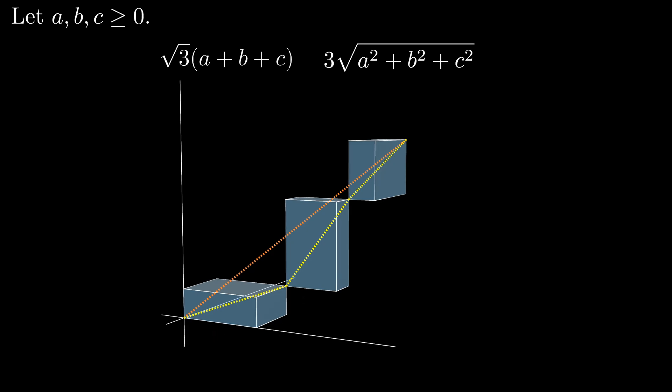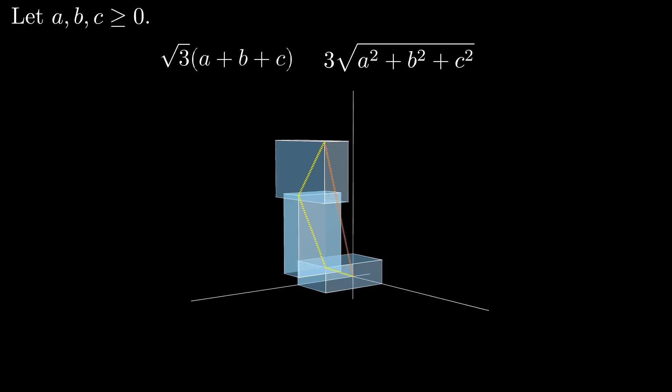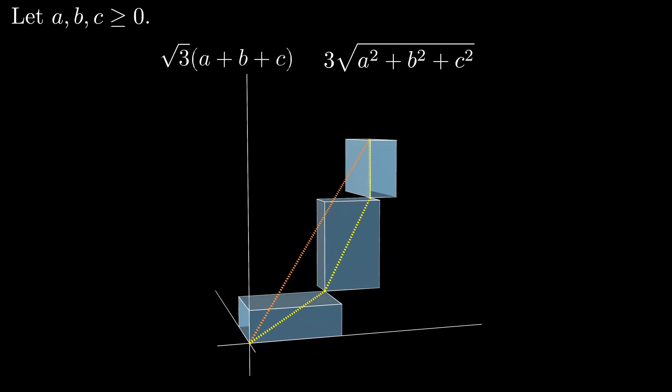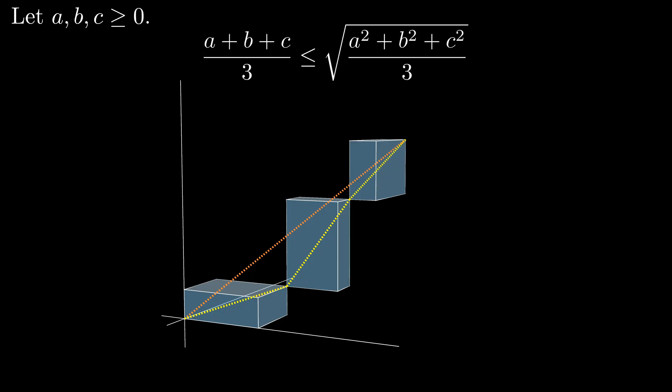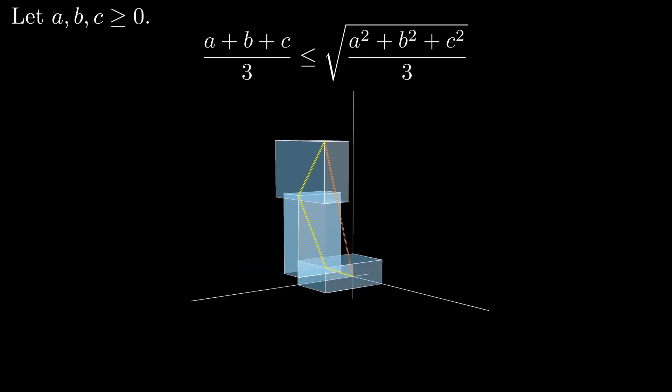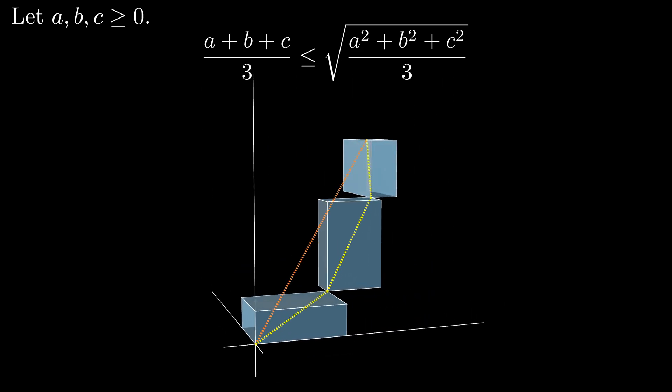But again, the orange line represents the shortest path from the origin to that point in space, and therefore the length of the orange line is less than or equal to the length of the path obtained by traversing the three yellow space diagonals. This means that the square root of three times the quantity a plus b plus c is less than or equal to three times the square root of the quantity a squared plus b squared plus c squared. When we divide both sides by three times root three, we see that a plus b plus c all over three is less than or equal to the square root of the quantity a squared plus b squared plus c squared all over three.